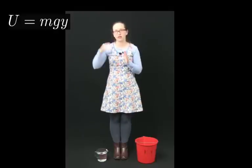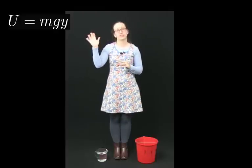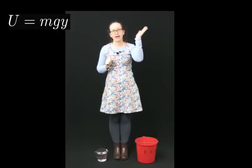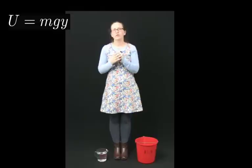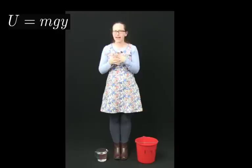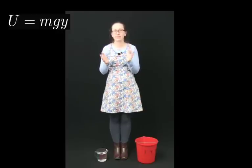Gravitational potential energy near the surface of the Earth is given by the formula U, which is the symbol for gravitational potential energy, equals m times g times y, where y is the height of the object. Let's consider how this equation comes about so that we can work out the limitations on it.